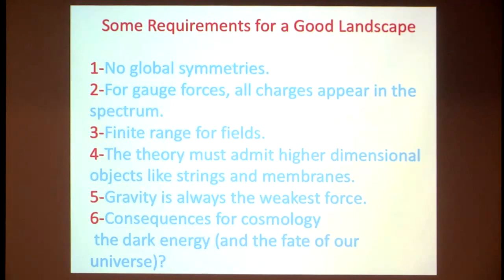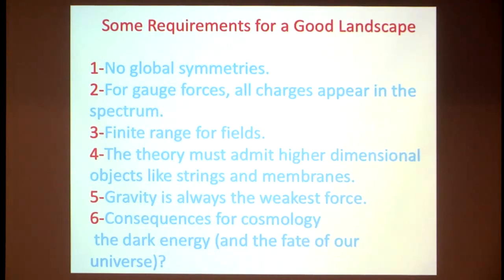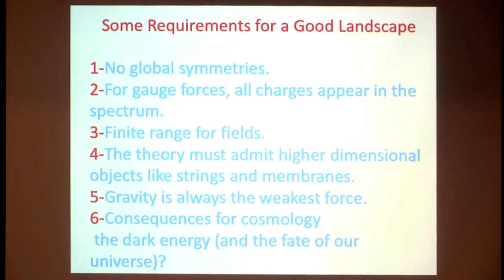We distinguish global symmetries from gauge symmetries. Gauge symmetries are things like electrons, which emit electrical fields outside — what we call gauge charges. Global symmetries are things you just count which have no electrical field emanating from them. We can have symmetries related to electrons — gauge charges — but not things which have no electrical field. So gravity forbids global symmetries but permits gauge symmetries.